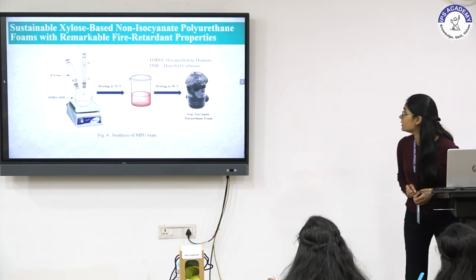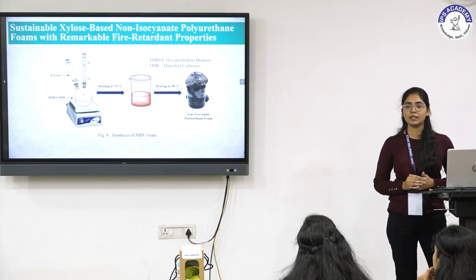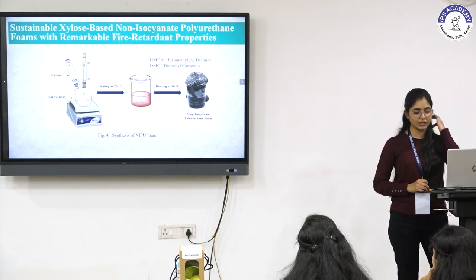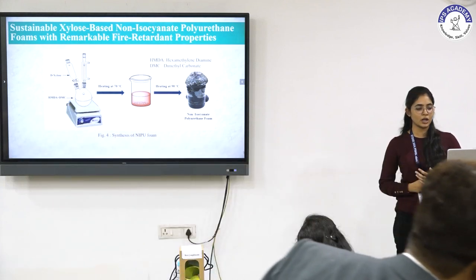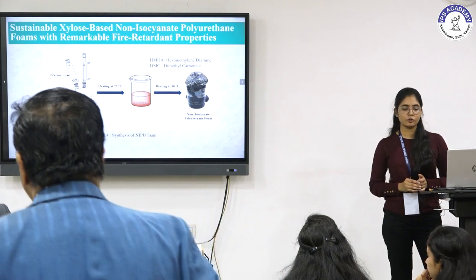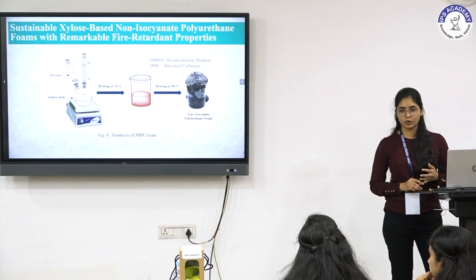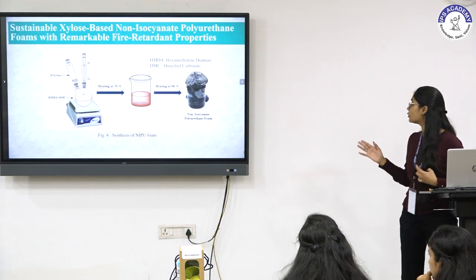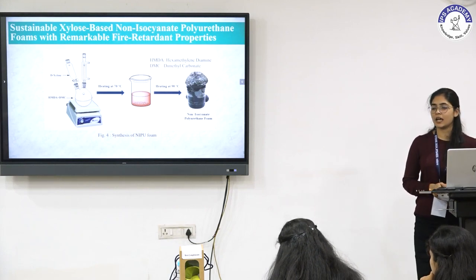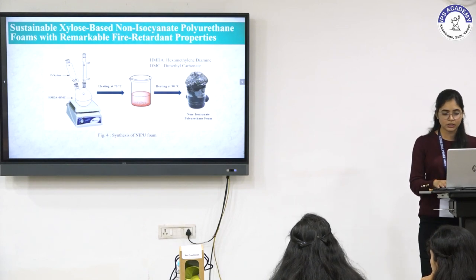This slide gives us an idea about the synthesis of NIPU foam. First, hexamethylene diamine was allowed to react with dimethyl carbonate at 70 degrees Celsius. The reaction was continued for about an hour, and afterwards a sugar solution of xylose was supplied to the material. Curing was done at 90 degrees Celsius for about 30 minutes — this is how the foam looked. For cross-linking, citric acid was used as a natural cross-linker and blowing agent.